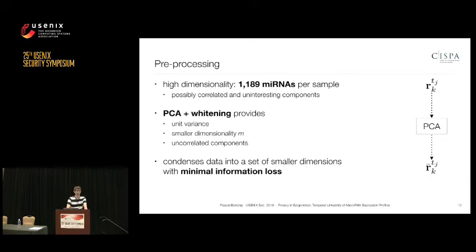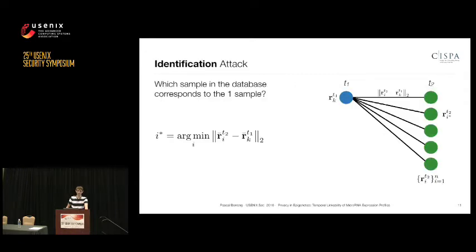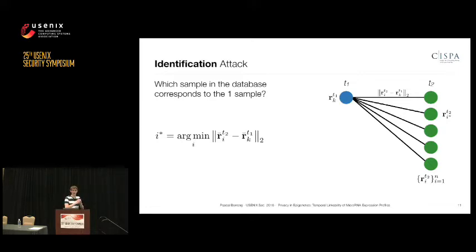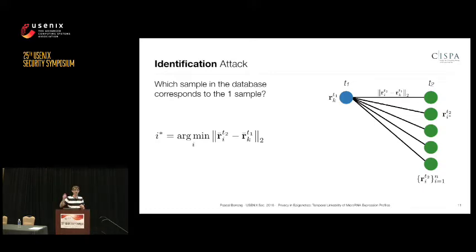Let's have a look at the first attack — the targeted identification attack. We have the sample of one target victim we want to find in the database. We use the pre-processed PCA vectors and measure the Euclidean distance between this victim and each entry in the database, choosing the entry that minimizes the Euclidean distance as the corresponding match.